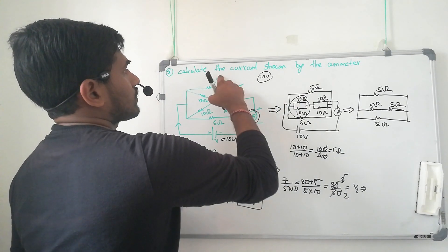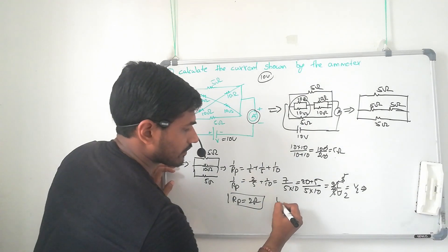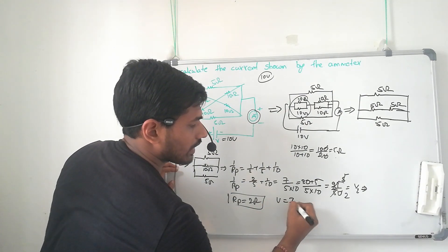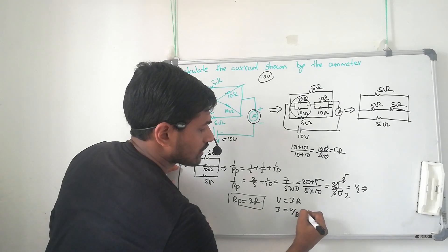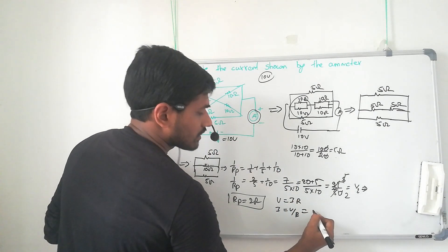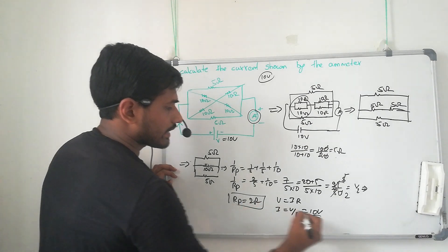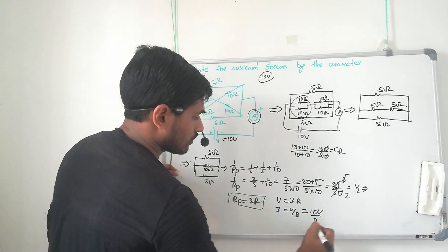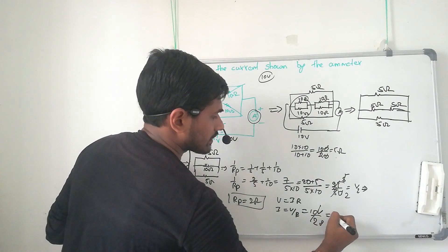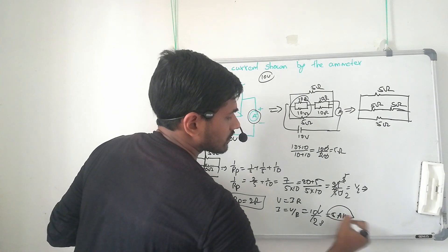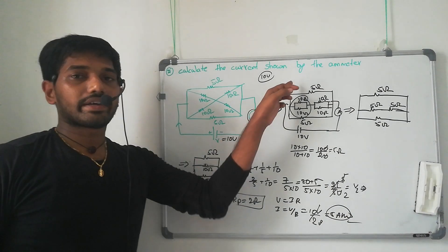So R parallel is equal to 2 ohm. Now we calculate the current shown in the figure. According to Ohm's law, V = IR, so I = V/R. The voltage given is 10 volts and the resistance is 2 ohms. After calculating, we get 5 amperes. So the current drawn by the ammeter is 5 amperes.